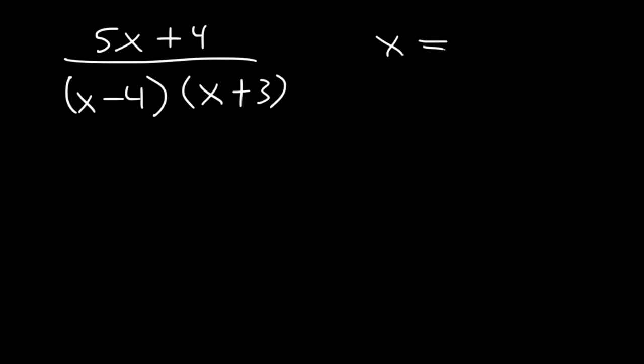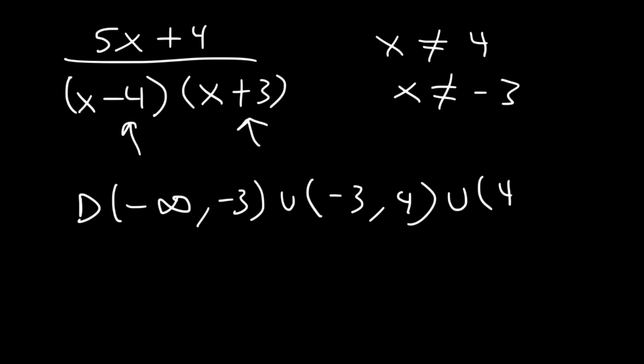Let's say if we have this. x cannot equal 4, and it can't equal negative 3. Just change the sign. If you set x minus 4 to 0, you'll get 4 for x. Now to write the domain, it's going to be negative infinity to negative 3. Negative 3 comes before 4, union negative 3 to 4, union 4 to infinity. So that's the domain for this function.